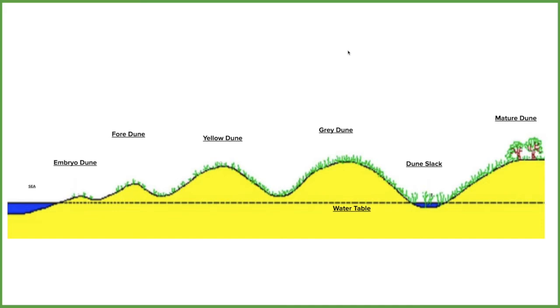Let's have a look at what this looks like in a sand dune. We've got a diagram here that represents the different stages of a sand dune's life. Right by the ocean we've got an embryo dune and a foredune.